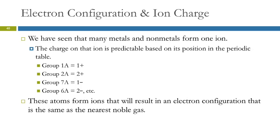We've seen that there's a lot of metals and most of the nonmetals that will only form one ion. They're predictable. The group 1A form plus one. Group 2A plus two. Group 7A is minus one. Group 6A is minus two. Group 5A is minus three. The atoms form those ions, as I just kind of explained, because when they do that, their electron configurations are the same as the nearest noble gas.